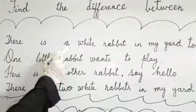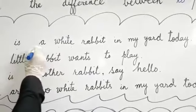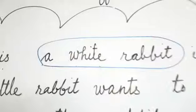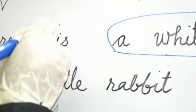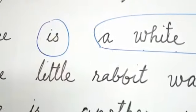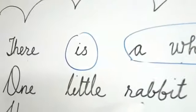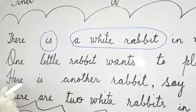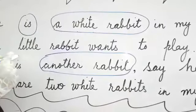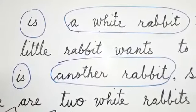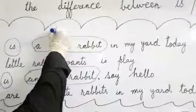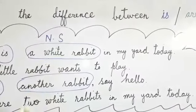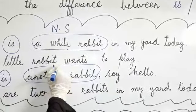'There is a white rabbit.' A white rabbit — how many rabbits? One. So for one, which linking verb comes here? Singular means 'is'. 'One little rabbit wants to play. Here is another rabbit.' 'Another rabbit' also shows a singular noun, so we use 'is' here again, because this noun is singular.